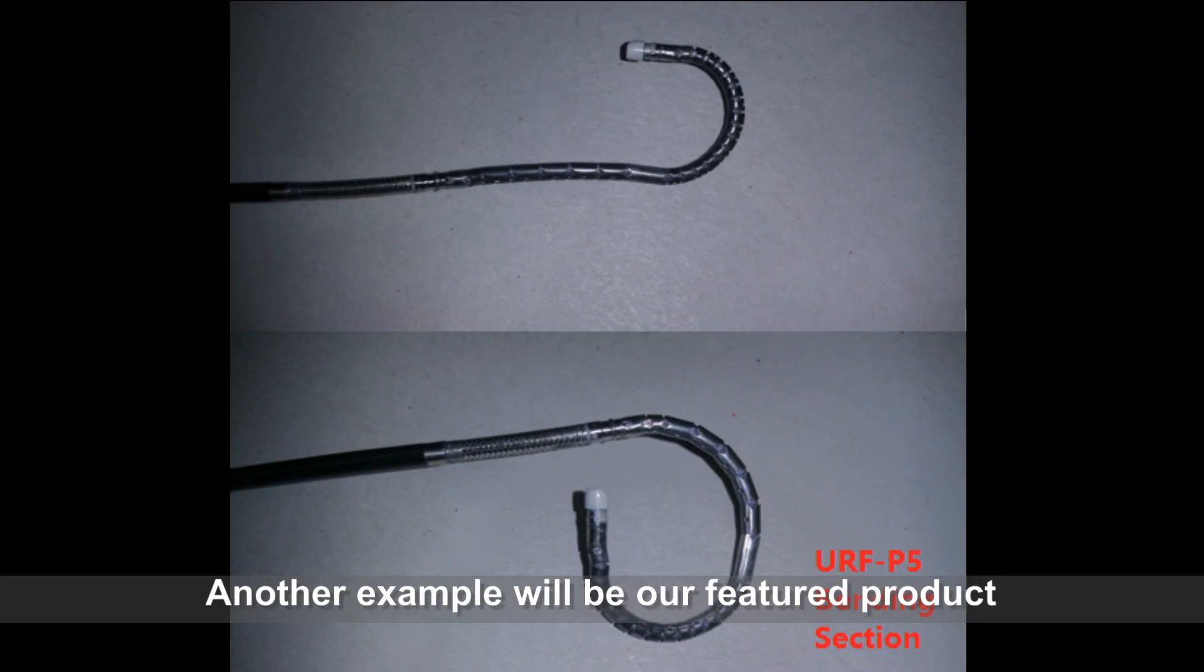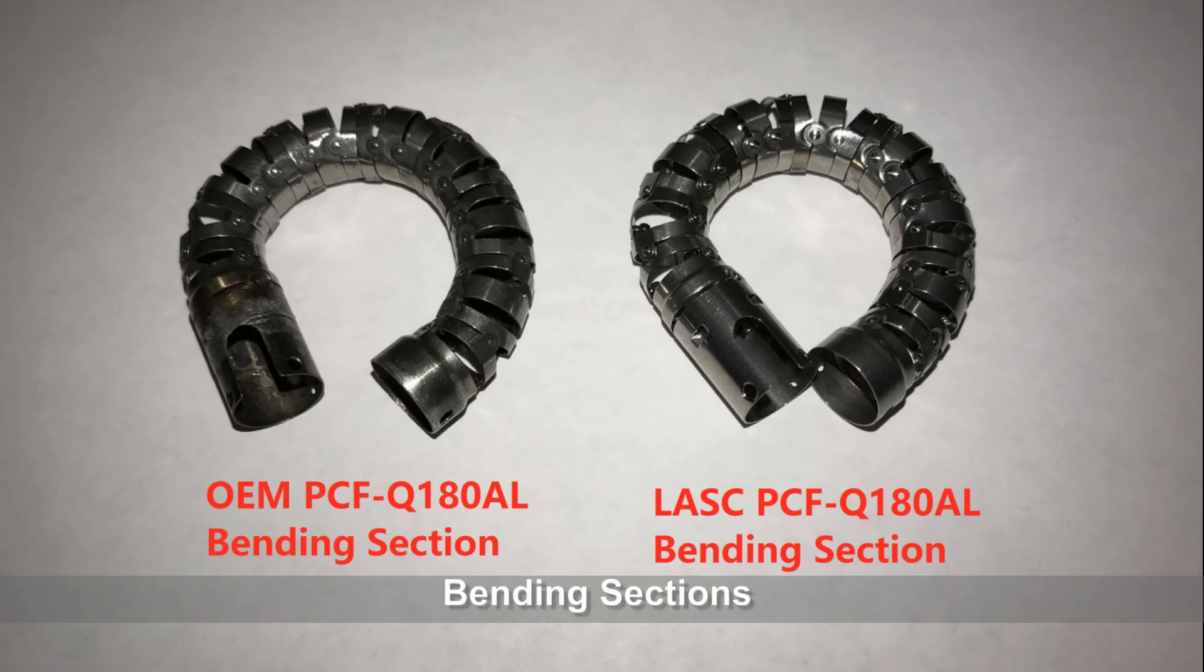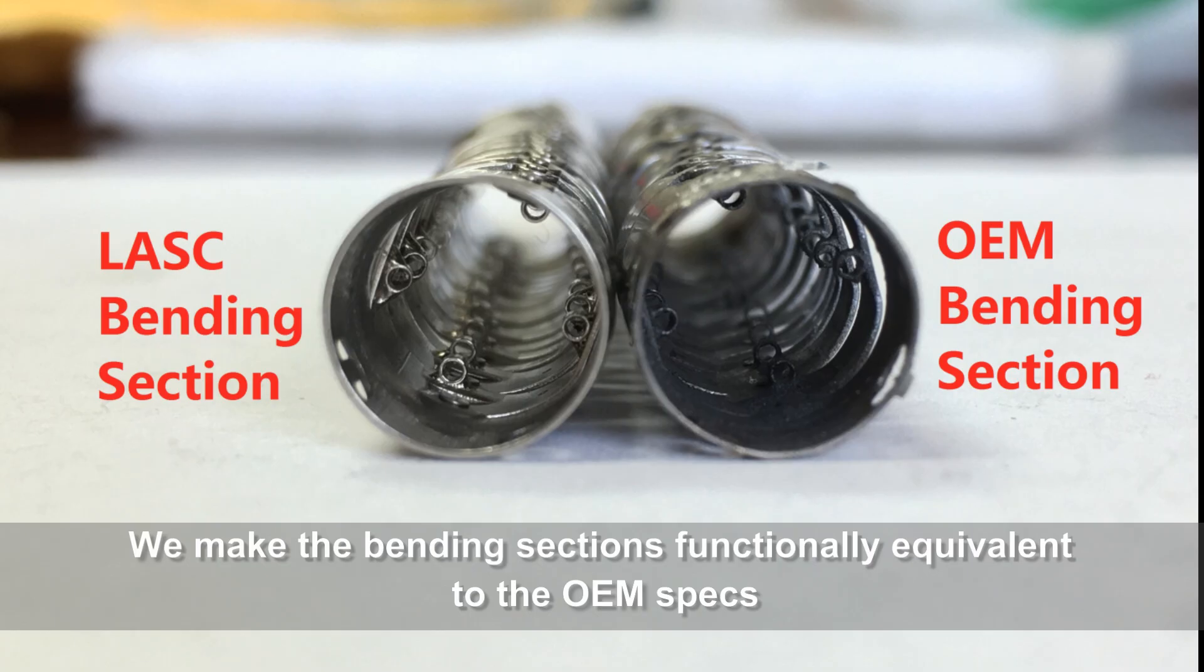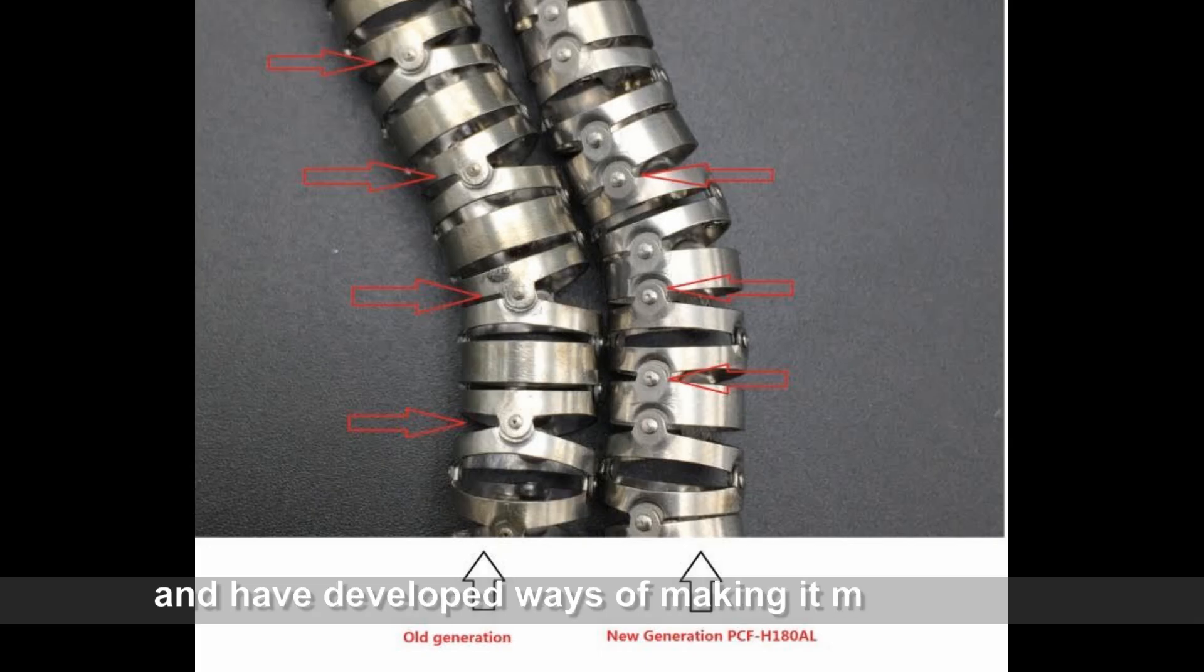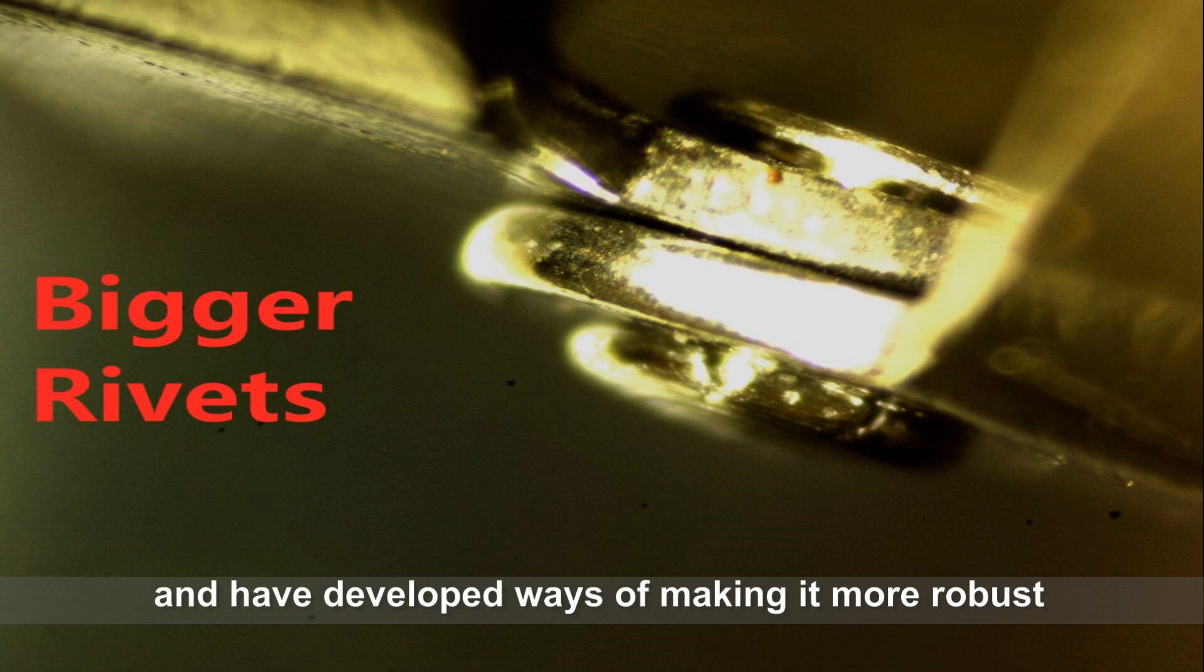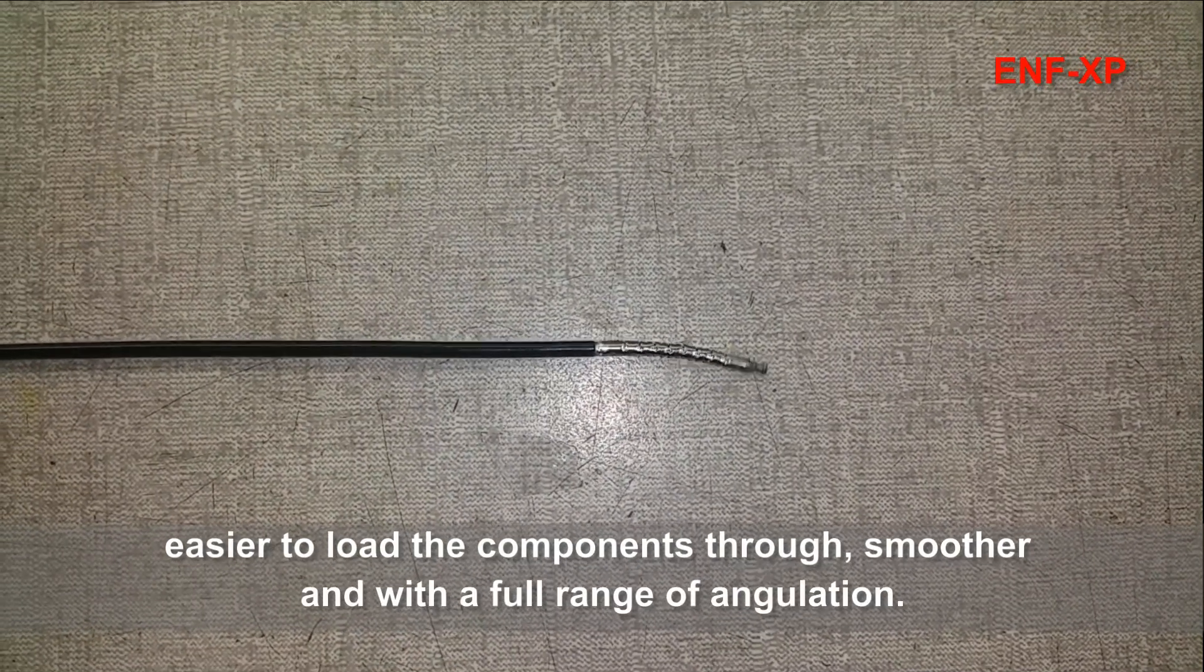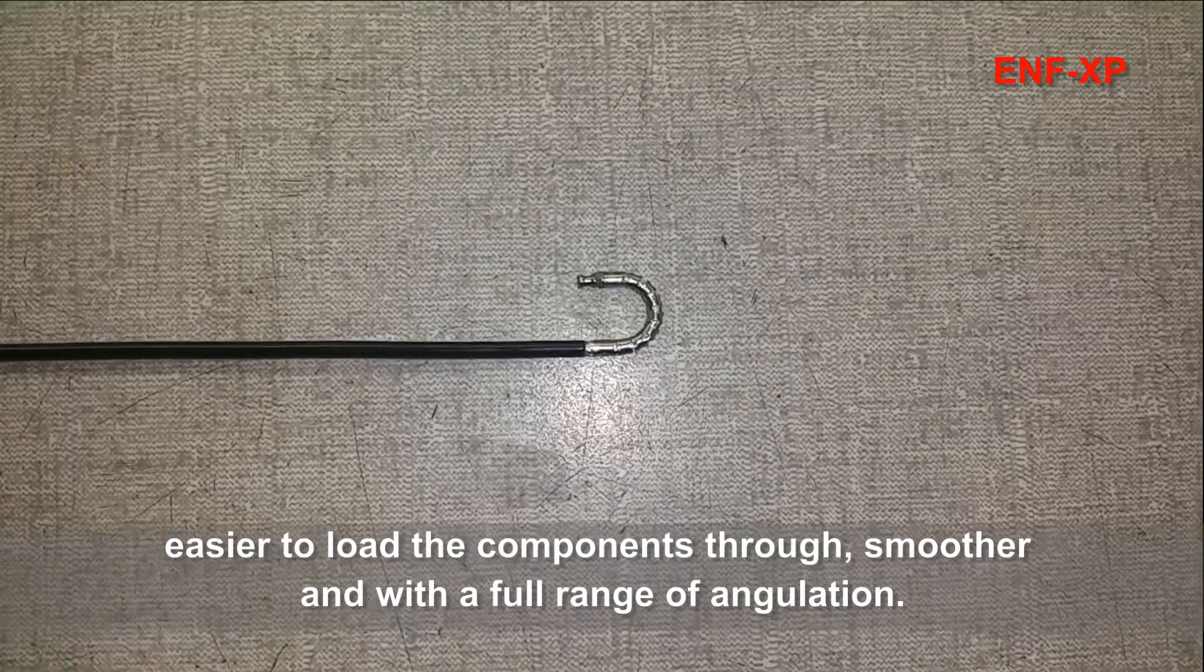Another example would be our featured product, bending sections. We made the bending sections functionally equivalent to the OEM specs and have developed ways of making them more robust. Easier to load the components through, smoother, and with a full range of angulation.